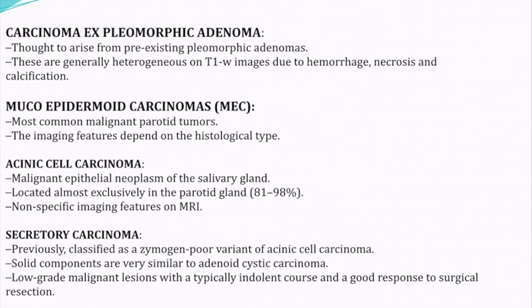Carcinoma ex-pleomorphic adenoma is thought to arise from pre-existing pleomorphic adenomas and is generally heterogeneous on T1-weighted images. Mucoepidermoid carcinoma is the most common malignant parotid tumour, and its MRI features depend on the histological grade. Acinic cell carcinoma is the most common malignant epithelial neoplasm occurring almost exclusively in the salivary glands, though imaging features are non-specific. Secretory carcinoma was previously defined as a zymogen-poor variant of acinic cell carcinoma; solid components are rare, similar to adenoid cystic carcinoma.